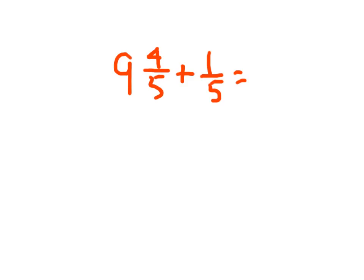This one here, we have a mixed number plus a fraction. The denominators are still the same. So we write that nine there still. Four-fifths plus one-fifths is equal to five-fifths. But nine and five-fifths is not in simplest form. Five-fifths is equal to what?